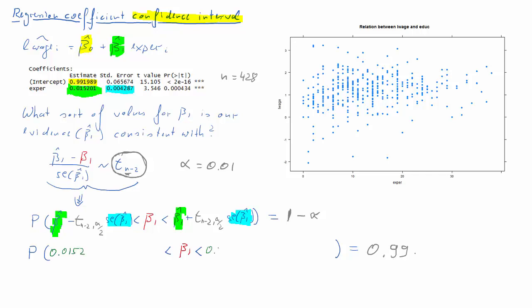From now on, we just substitute in a few numbers. Our sample estimate beta 1 hat is 0.0152. Then we need the standard error for beta 1 hat, which is 0.0043. Then we need that t-factor.